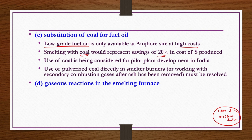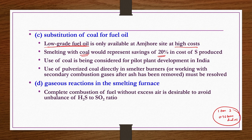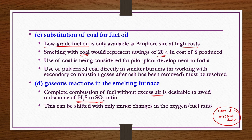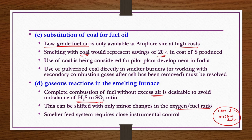Gaseous reactions in the smelting furnace require complete combustion of fuel without excess air to avoid upsetting the H2S/SO2 ratio. If this ratio is not maintained properly, the degree of reaction conversion at the hot and cold stages may not be achieved. This can be shifted with only minor changes in oxygen-to-fuel ratio. The smelter feed system also requires close instrumental control due to the specified settling velocity of the 200 mesh size particles.